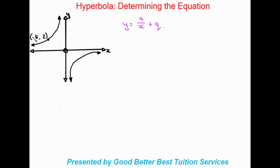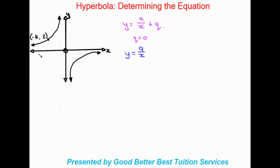We need to use the given point: minus four and two, where minus four is the x value and two is the y value. We can see there is no vertical shift — the asymptote is the x-axis itself — which means there is no q value, so q is equal to zero. Therefore the standard form of the equation for this graph is y is equal to a over x.